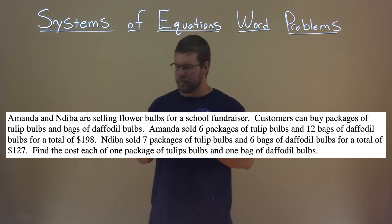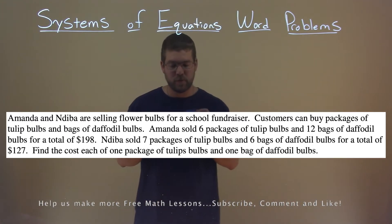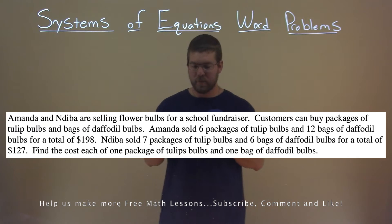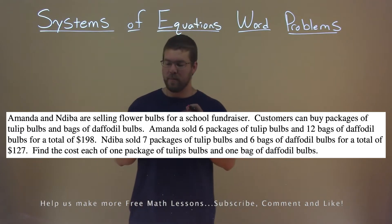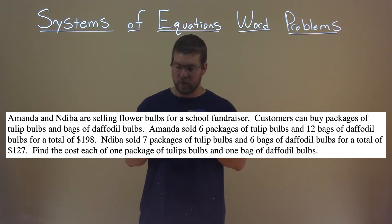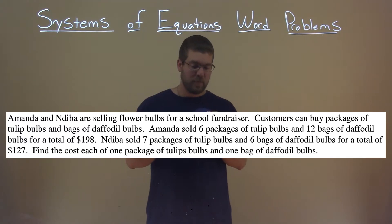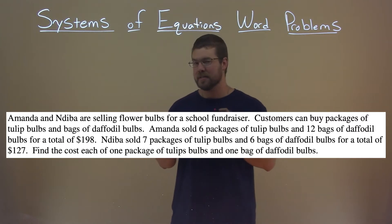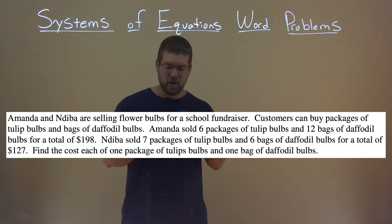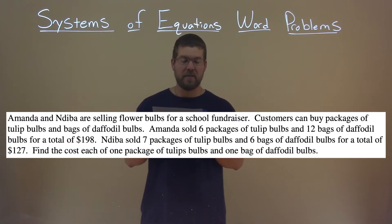We're given this problem right here. Amanda and Nadanaiva are selling flower bulbs for a school fundraiser. Customers can buy packages of tulip bulbs and bags of daffodil bulbs. Amanda sold 6 packages of tulip bulbs and 12 packages of daffodil bulbs for a total of $198. Nadanaiva sold 7 packages of tulip bulbs and 6 packages of daffodil bulbs for a total of $172. Find the cost of 1 package of tulip bulbs and 1 bag of daffodil bulbs.